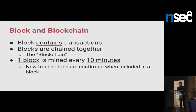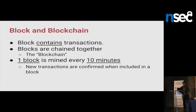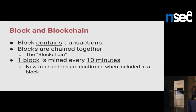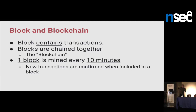Now, for the block and blockchain. A block mostly contains transactions. When a transaction is created on the network, it is in the unconfirmed state. As soon as it's included in a block, it becomes confirmed. For our purposes, when a transaction is in the block, it's confirmed. The blocks are chained together and create the blockchain — the big registry of all transactions. A block is mined every 10 minutes, and new transactions included in each new block become confirmed and are in the transaction history forever.